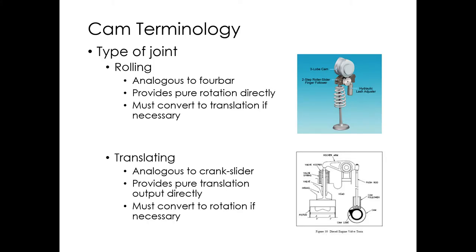There are two major kinds of contact: rolling and translating. A lot of what I'll talk about is for automotive cams. Looking at an overhead cam setup, we have a cam timed to rotate with the crankshaft. For a four-stroke engine, the cam rotates half as fast as the crankshaft because each valve opens and closes every two crankshaft revolutions. In this case the cam impinges on a roller — rolling contact — so there's not a lot of friction at the interface.